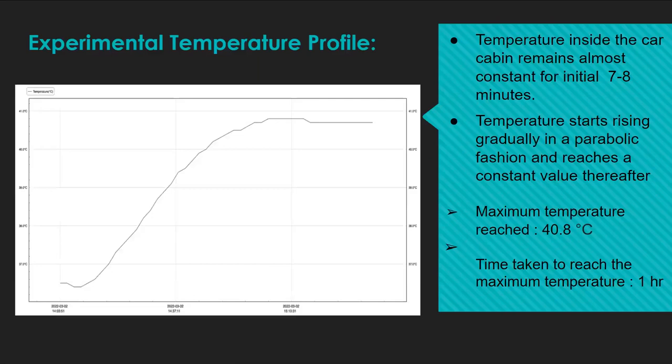This is the experimental temperature profile we obtained by using the data logger device. From this graph, we can observe that the temperature inside the car cabin remains almost constant for initial 7 to 8 minutes. Then the temperature starts rising gradually in a parabolic fashion and then we can see that it reaches a constant value thereafter. In this graph, the maximum temperature reached is 40.8 degrees Celsius and the time taken to reach the maximum temperature is 1 hour.